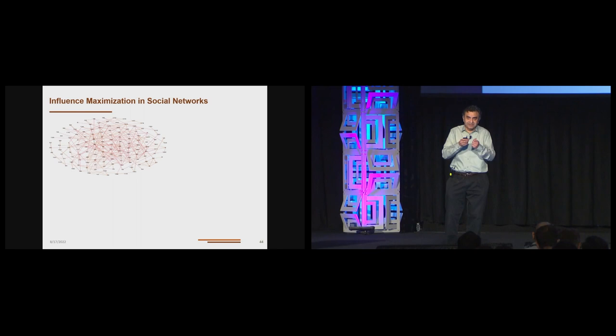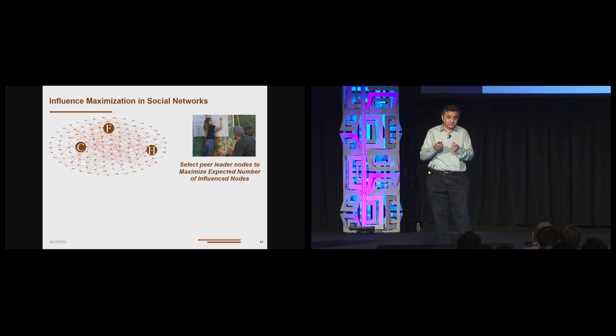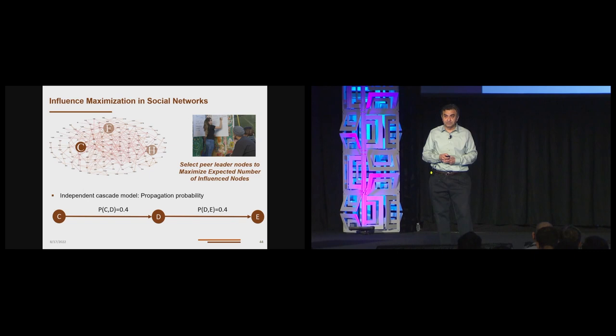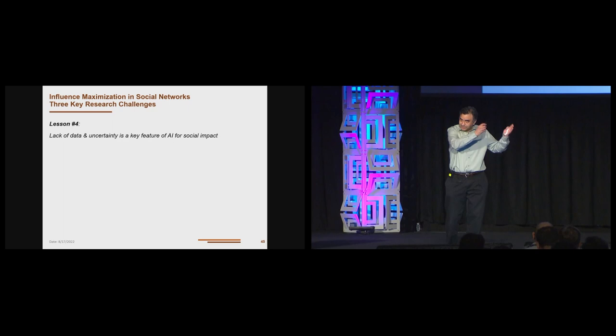This is real face-to-face interaction. This is not happening over Facebook. So the problem is that we have this social network. Each number here represents a youth. Each red line is an edge, a friendship edge between two youth. And now we have to choose key influencers. We want to select peer leader nodes to maximize the expected number of influenced nodes. Information here is supposed to spread via this independent cascade model. So if a youth C gets educated about HIV prevention, then a neighboring youth D will be informed with a probability of 0.4 about HIV prevention.